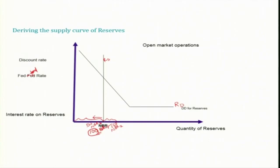Suppose if you are considering only open market operations — let us take some time before introducing the discount window — then the supply curve intersects the demand curve at one point. The supply of reserve RS and the demand for reserve RD intersect, and this intersection point gives us the equilibrium Fed Fund rate. At equilibrium, RS equals RD — the quantity supplied equals the quantity demanded at that Fed Fund rate.